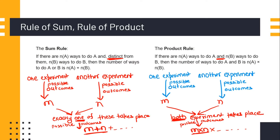If you are performing two experiments, one experiment is having possible outcome of m and another experiment is having possible outcome of n. If exactly one of these experiments takes place — meaning both experiments are distinct from each other and only one is taking place at a time — then the possible outcome will be the addition of these, that is m plus n. This is called the rule of sum.